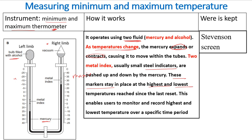You can easily measure the maximum temperature by taking the reading from the top index, and the minimum temperature from the bottom index. For example, the minimum temperature might read around 15 degrees Celsius, while the maximum temperature is around 28 degrees Celsius. The thermometer is kept inside the Stevenson screen.